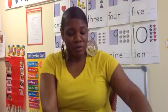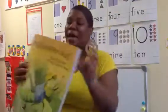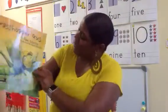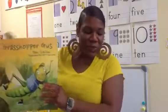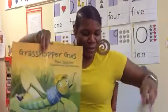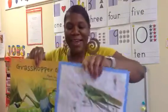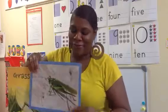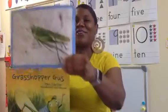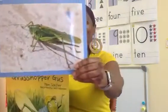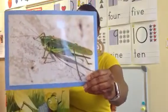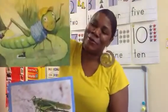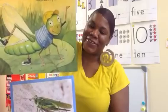So if you saw the story Grasshopper Gus, it talks about a grasshopper. Now I have a real life grasshopper. Can you tell the difference between this grasshopper and the storybook character grasshopper?